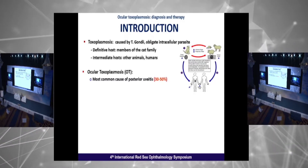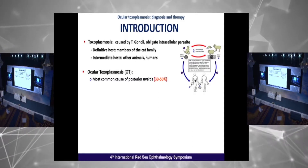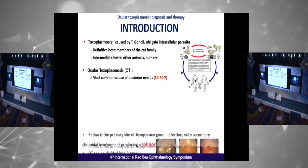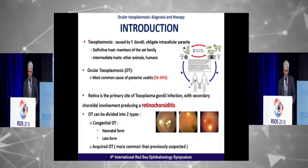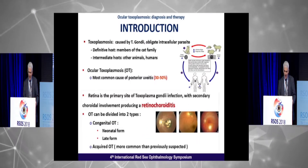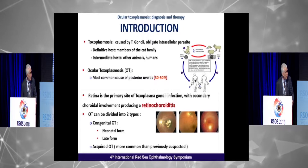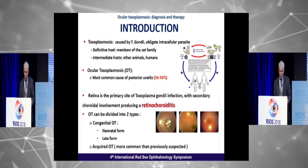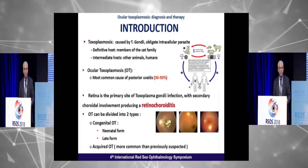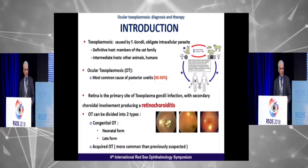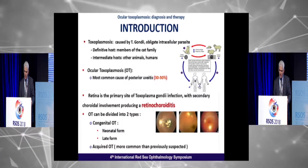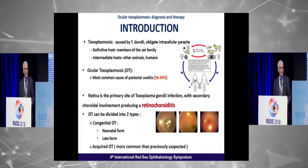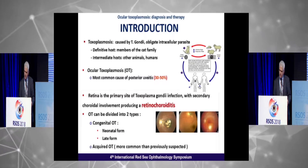Ocular Toxoplasmosis is the most common cause of posterior uveitis in all countries around the world. The retina is the primary site of Toxoplasma gondii infection, with secondary choroidal involvement producing retinochoroiditis. So the appropriate term is retinochoroiditis, not chorioretinitis.